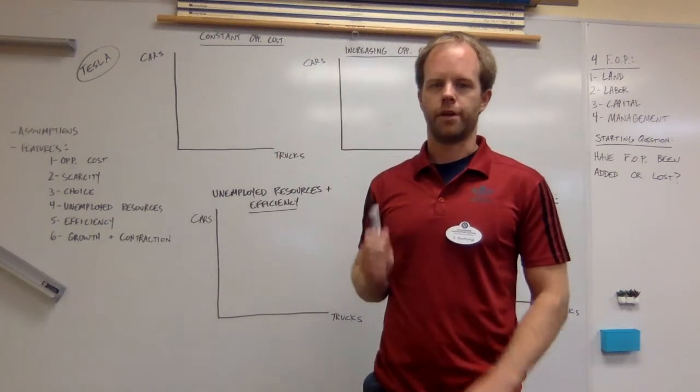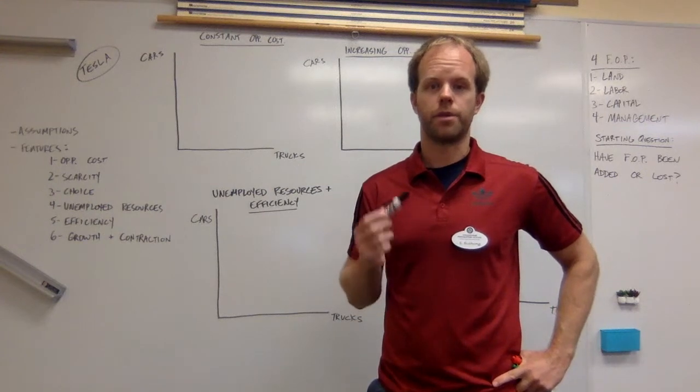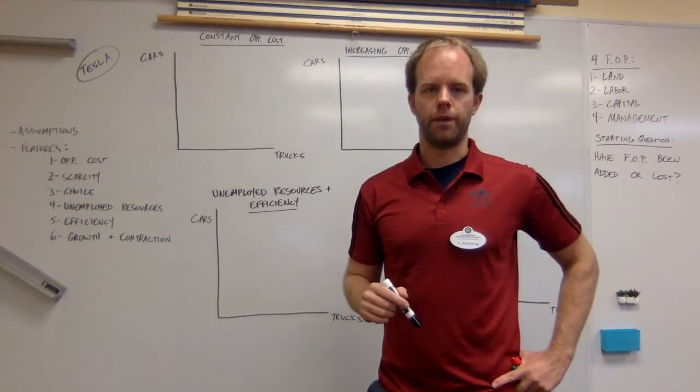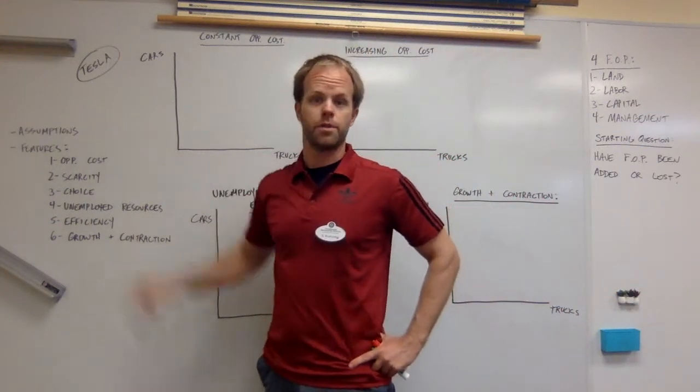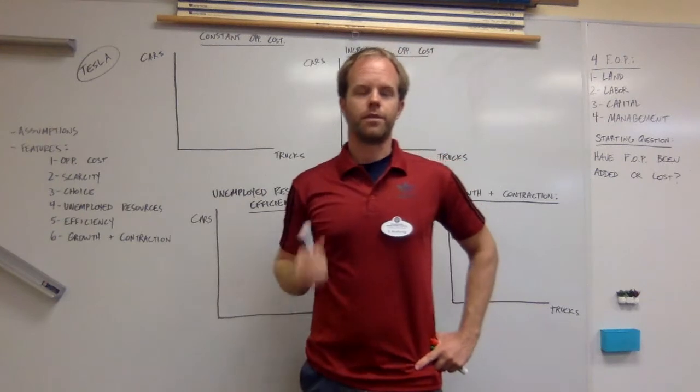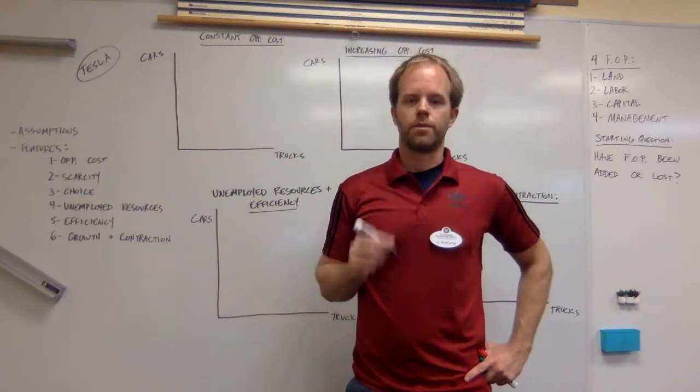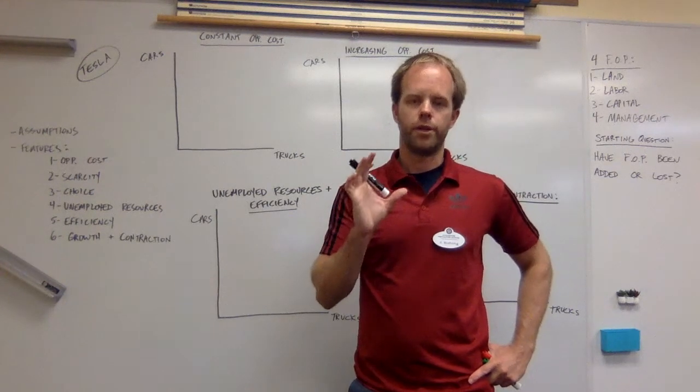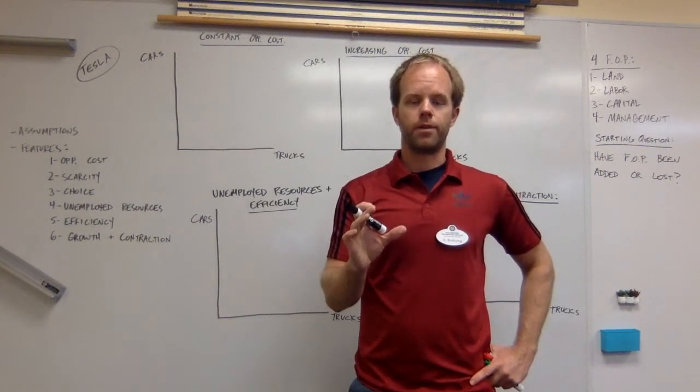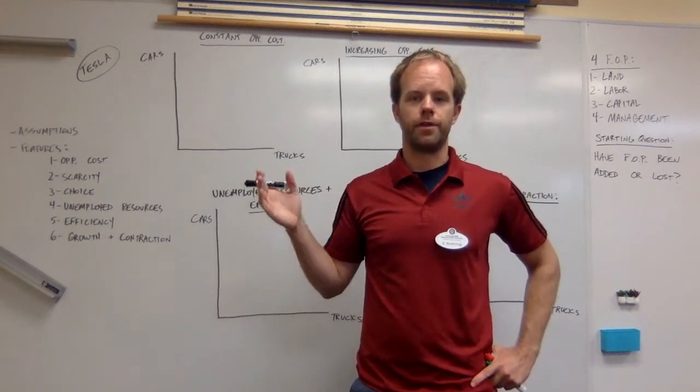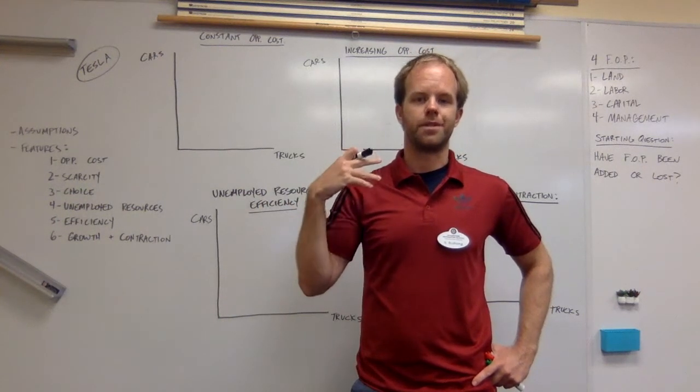Welcome everyone. We are here to talk about the first diagram on the new syllabus, the production possibilities curve. To start, we should consider some assumptions before we begin talking about what this model is. First of all, we're assuming that this model only shows the producer's perspective. This is the production possibilities curve, so we are thinking about businesses and those businesses making things.